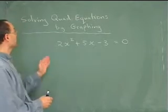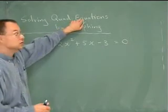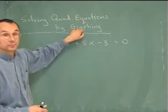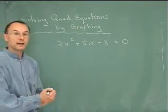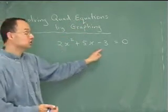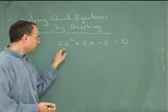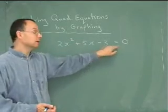Today we're going to look at solving quadratic equations by graphing. The kinds of things that we would like to solve are equations like this one: 2x squared plus 5x minus 3 equals 0.